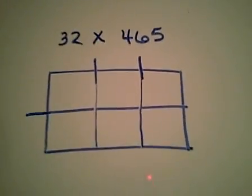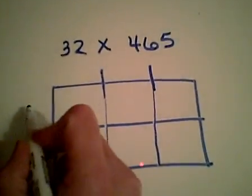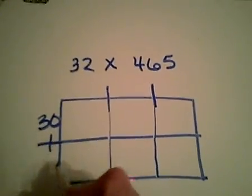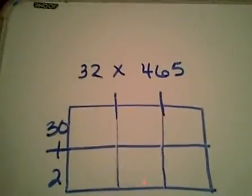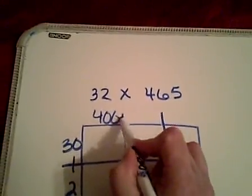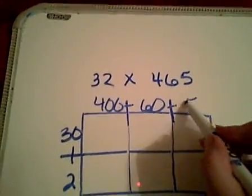Now I'm going to take each number and I'm going to write it in expanded form next to the boxes. 30 plus 2, right up here. 400 plus 60 plus 5.